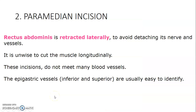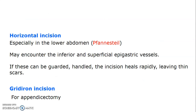The paramedian incision is done lateral to the rectus abdominis; you are not advised to cut the muscle longitudinally. When you make the incision you make sure you avoid the blood vessels — you have the superior and inferior epigastric vessels, which are usually easy to identify. The Pfannenstiel incision is a low transverse incision at the suprapubic area for caesarean sections, but other gynaecological surgeries are also done through this incision.